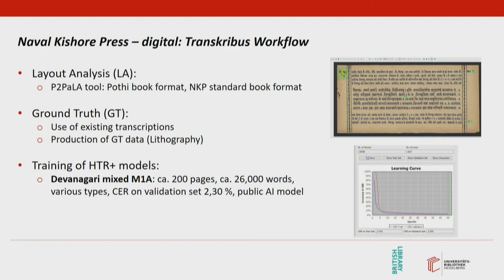For the ground truth, we used existing transcriptions from an earlier phase of the project, though extensive post-correction was necessary. For our Transkribus experiments, we created the ground truth ourselves. Our generic HTR Plus model for Devanagari, which we now use for the NKP collection as well as other Devanagari texts, was trained on 200 pages and 26,000 words of ground truth based on five different typefonts. It achieves a character error rate of only 2.3% on the validation set. Because of these good results, we have made the Devanagari Mixed M1A model available as a public model on the Transkribus site, and it has already received quite good feedback from the community.